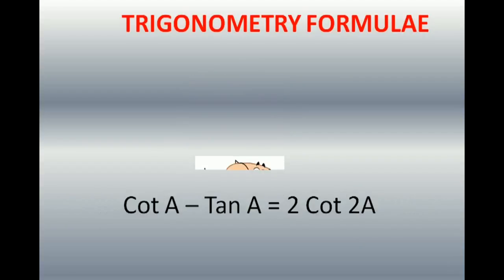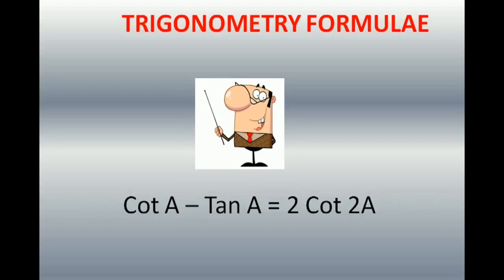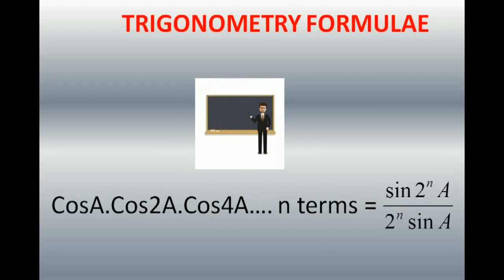Very important formula: cot A − tan A = 2 cot 2A. Suppose you have cot 2A − tan 2A — you can write that as 2 cot 4A. Just follow the pattern. Now a very important formula to help with products of cosines: cos A · cos 2A · cos 4A · cos 8A and so on — these are all double-angle steps. To N terms, the formula is sin(2^N · A) / (2^N · sin A).